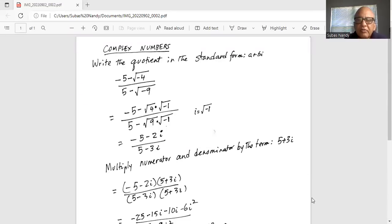Write the quotient in the standard form, a plus bi, which is a representation of a complex number. A is the real part, B is the imaginary part, which is the coefficient of i, which is the imaginary number. So here we have minus 5 minus square root of minus 4 divided by 5 minus square root of minus 9.